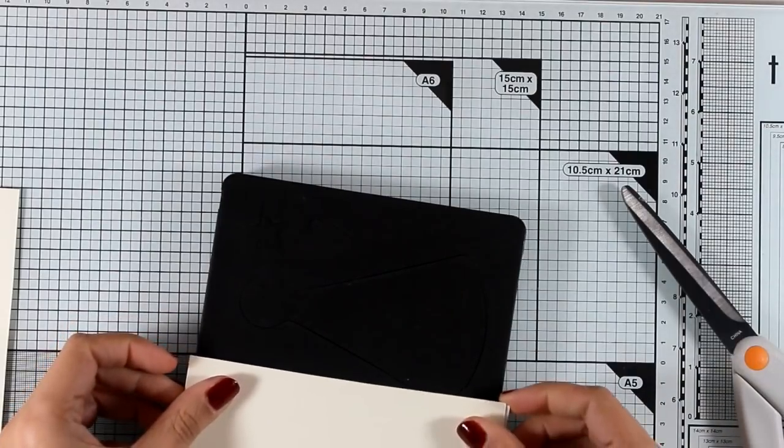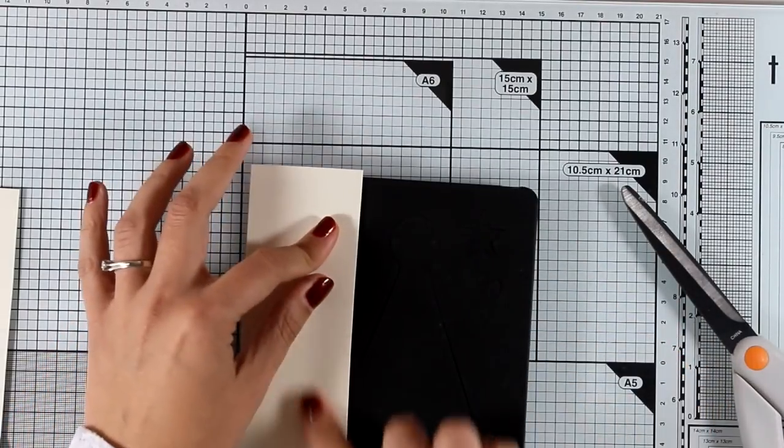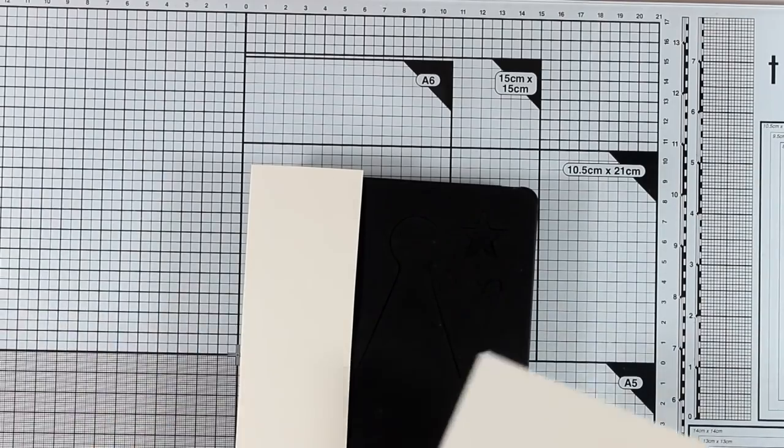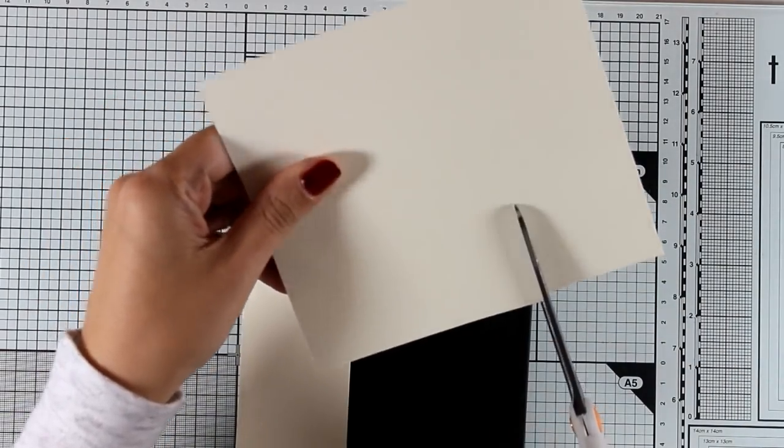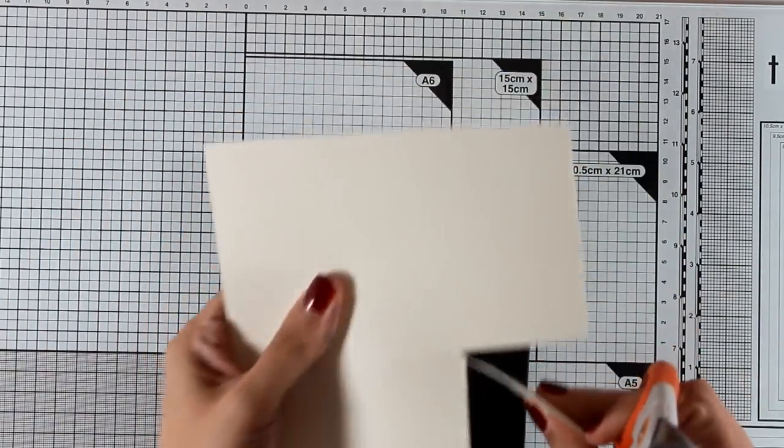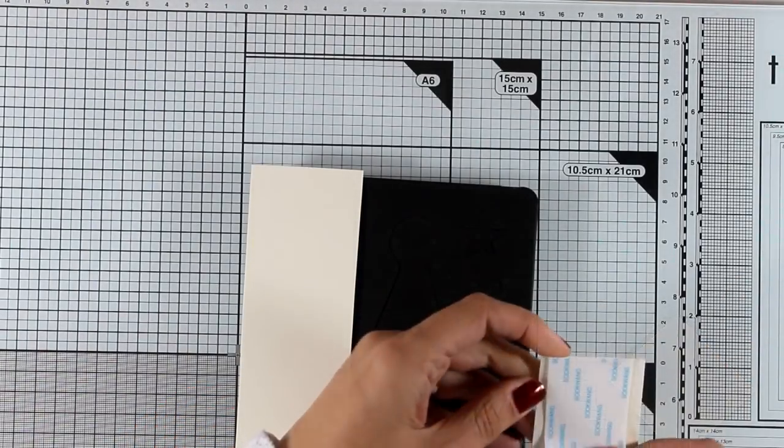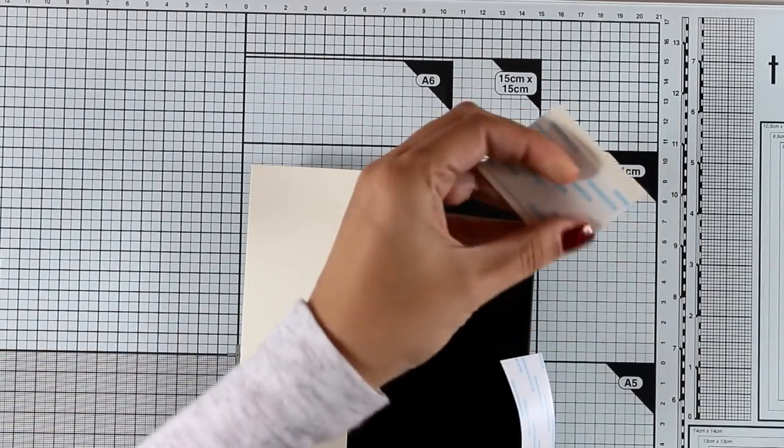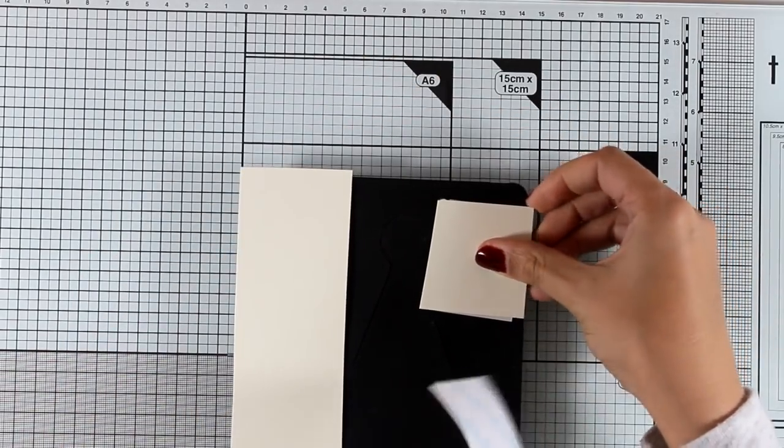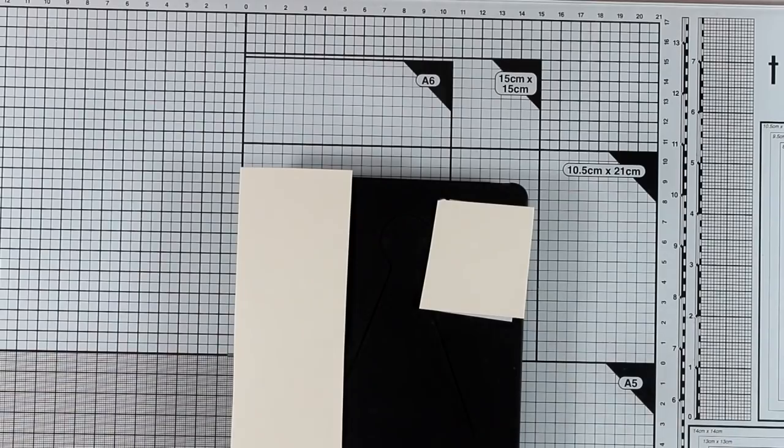Now all I'm doing is measuring and cutting out little pieces that I will be placing on top of my Bigz die so that I can cut out many different shapes with one pass. In some of these pieces I am already adding some double-sided tape before I cut them out.